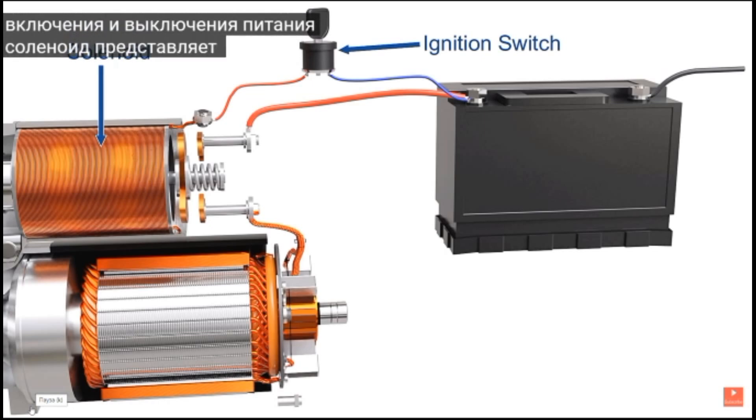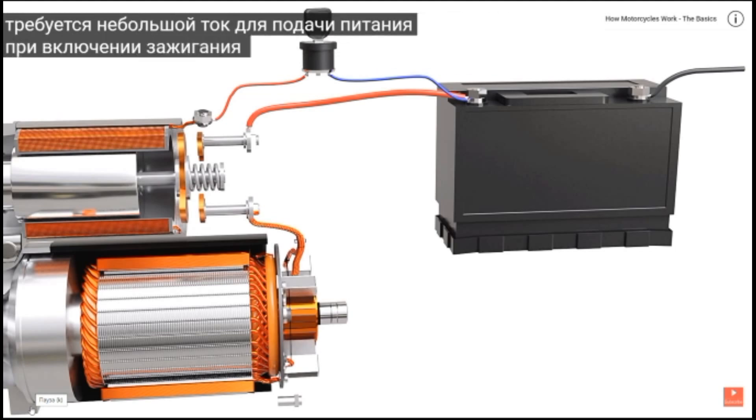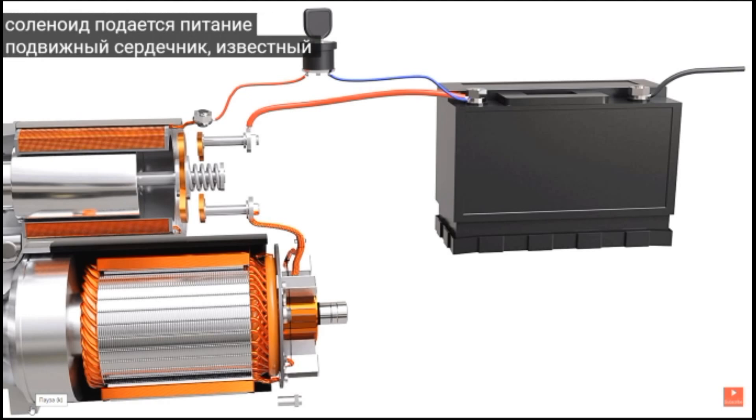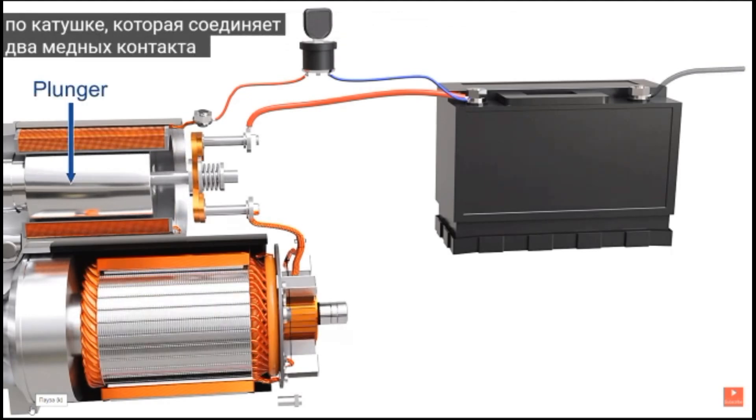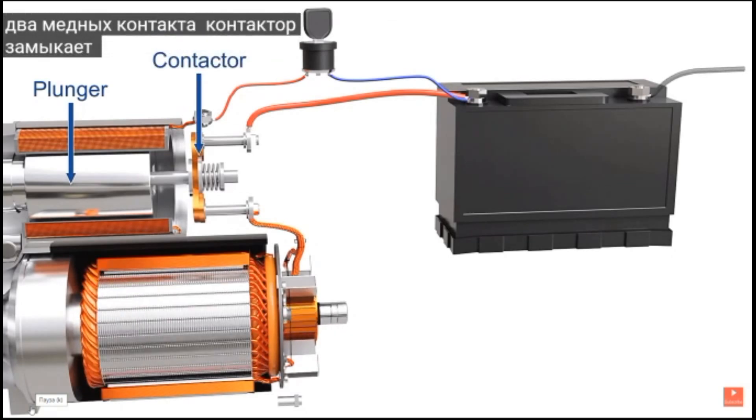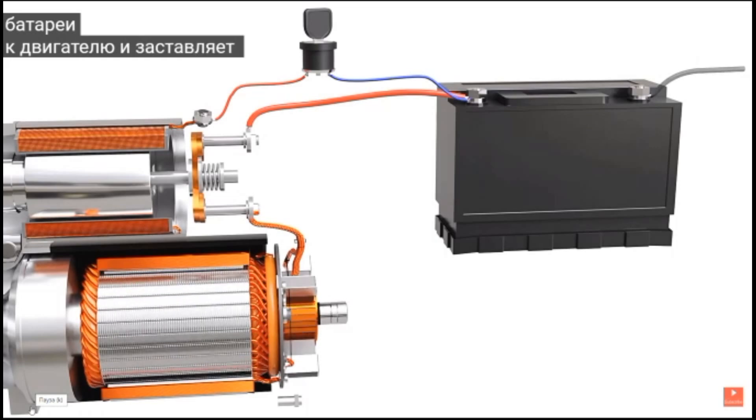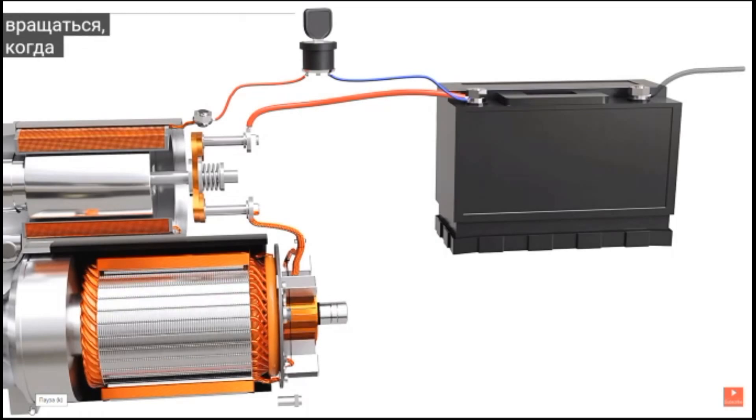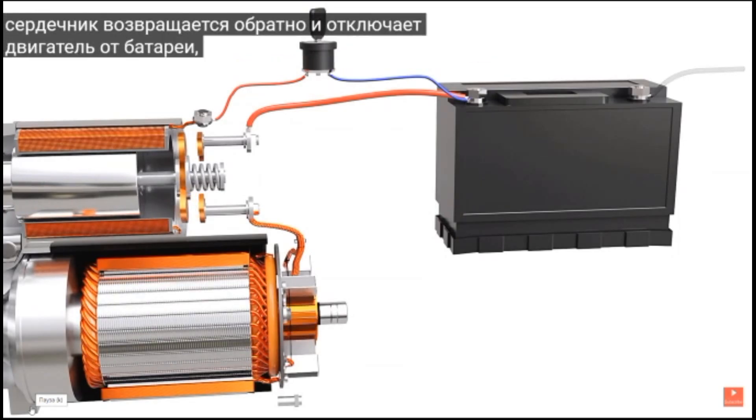The solenoid is an electromagnet which requires small current to get energized. As the ignition switch is turned on, the solenoid gets energized. A moving core, known as a plunger, slides along the coil, which connects two copper terminals of a contactor switch. This completes the circuit from the battery to the motor and causes the rotor to spin. When the solenoid is de-energized, the core returns back and disconnects the motor from the battery.